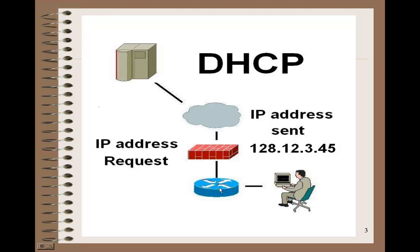Oftentimes, if the router freezes up or hangs, just turning it off and on isn't enough — sometimes the computer will not automatically be able to reconnect using the DHCP server. So by turning both off, then turning the router on first, waiting a couple of minutes, and then turning the computer on, that'll often correct a connection problem.